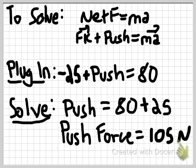To plug in the correct values, note that friction is negative because it acts in the opposite direction of the velocity. Our equation is now negative 25, which is the friction force, plus the push force equals 80, which is the acceleration of 0.8 multiplied by the mass, 100.